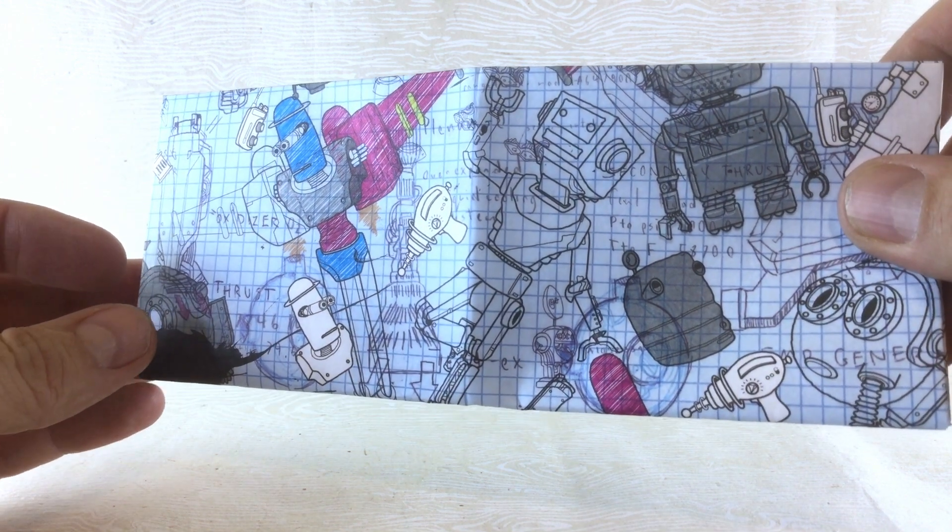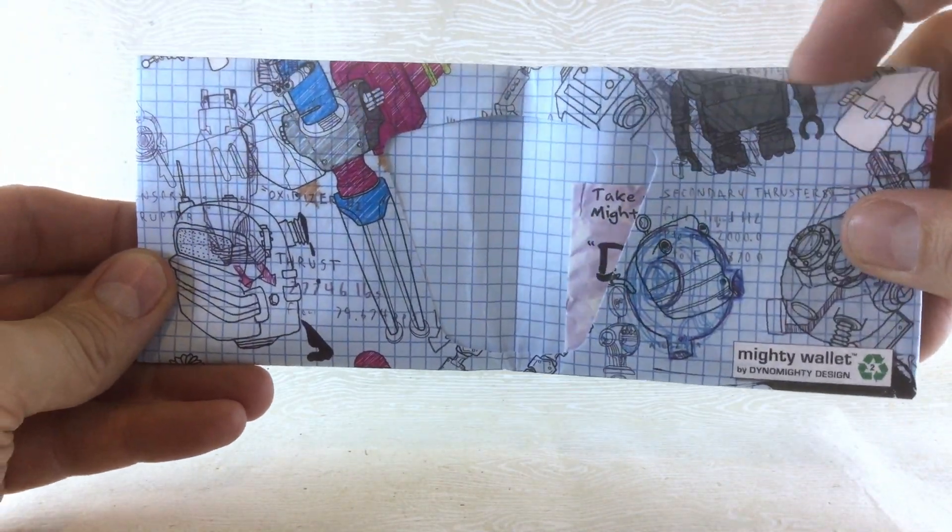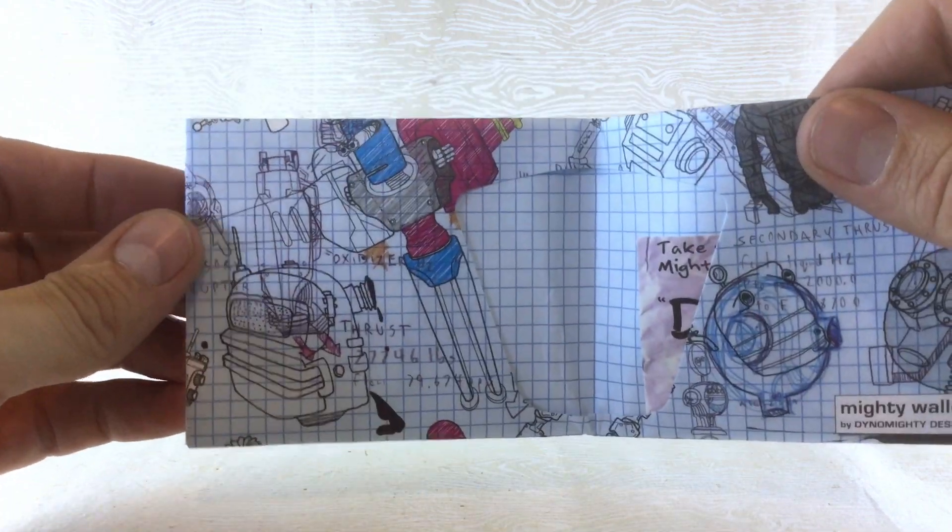But the graph paper really translates really well, looks like paper, which is always great because people are always fooled. They're like, what did you make that wallet?